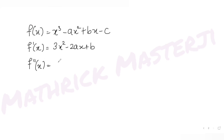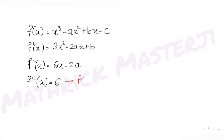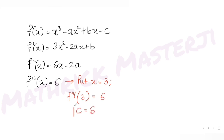f''(x) = 6x − 2a, and f'''(x) = 6. Now let's find c. f'''(3) was taken as c, and putting x = 3 gives f'''(3) = 6. So c = 6.